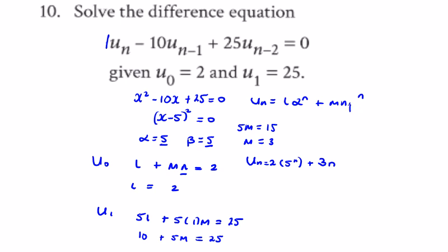Keeping it consistent with α, the solution is u_n = 5^n(2 + 3n).